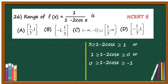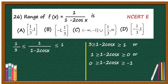That is, if you take the reciprocal of this inequality, the inequality will reverse. That is, 1/3 ≤ 1/(1 - 2cos x) ≤ 1.